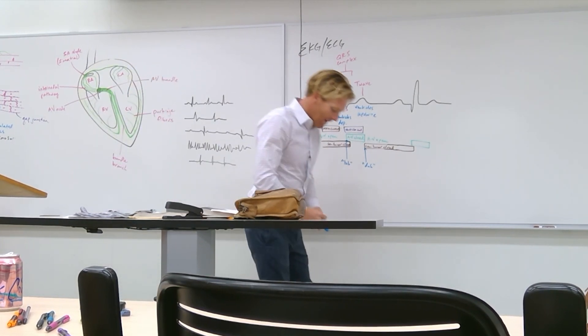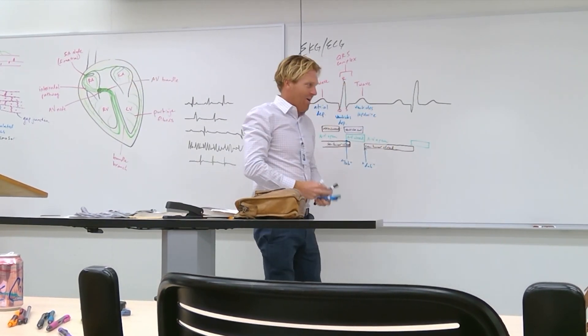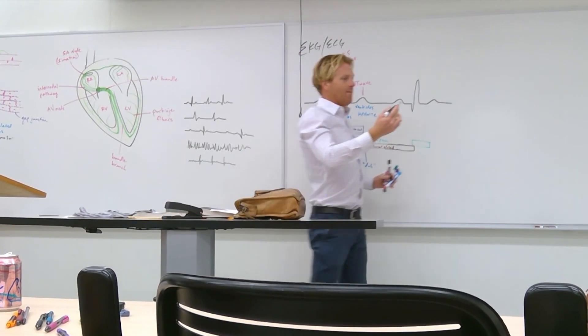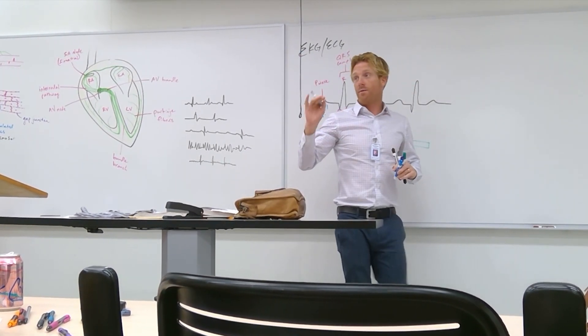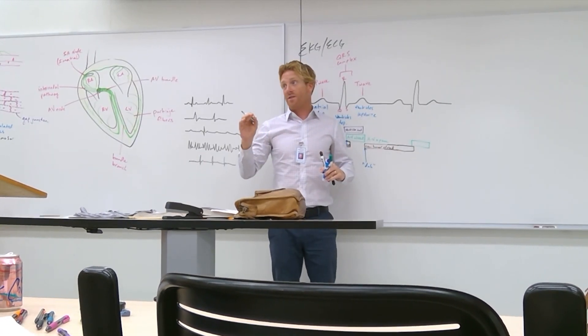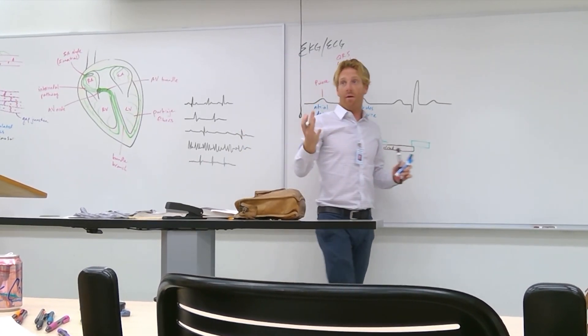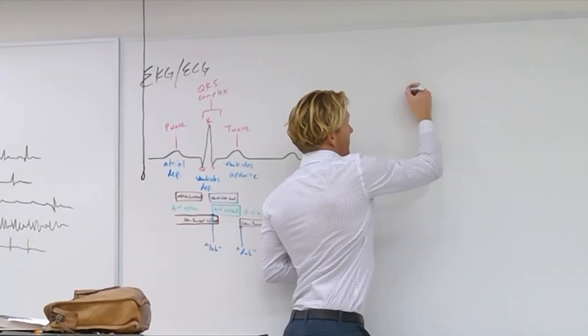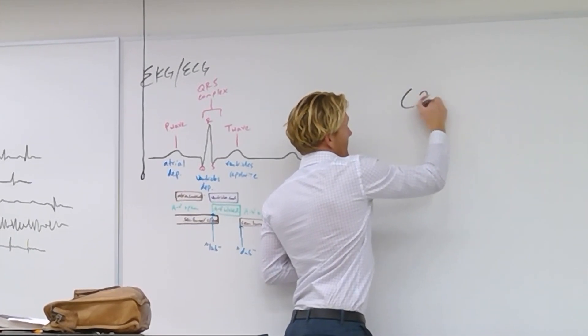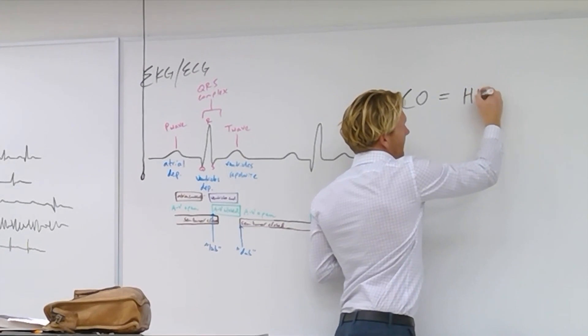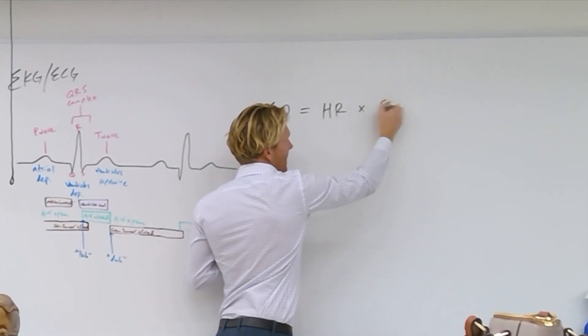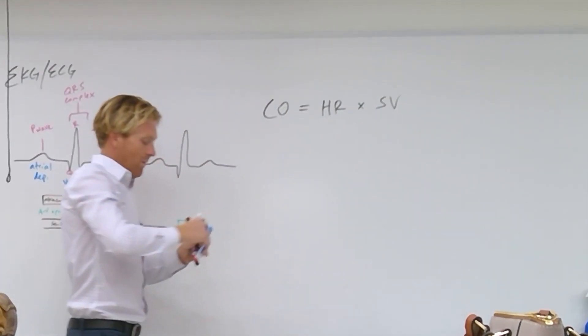Well, we got to talk about how much blood the heart can pump in a given amount of time. And that is called cardiac output. So this term cardiac output refers to how much blood comes out of the heart in a given amount of time. And we're going to say CO, that's cardiac output, equals heart rate times stroke volume. I'll label it.